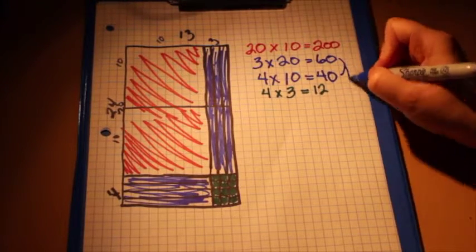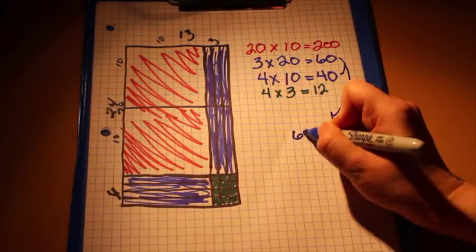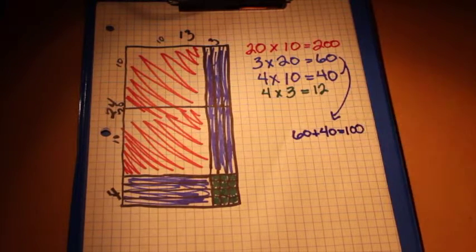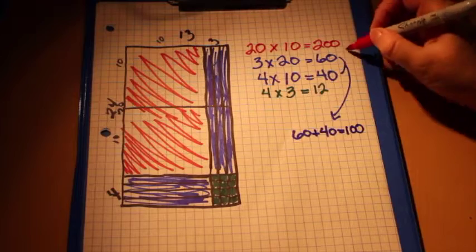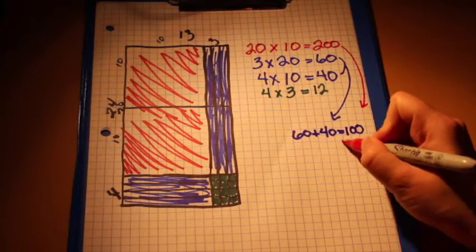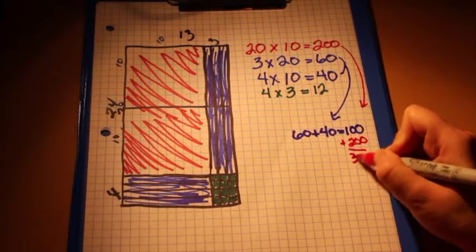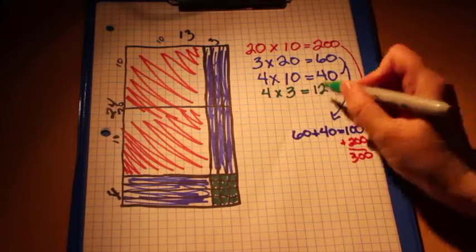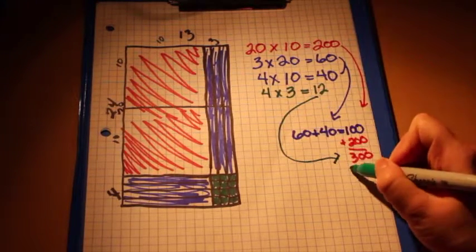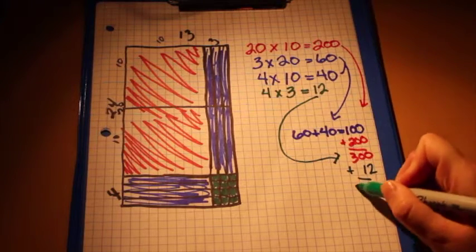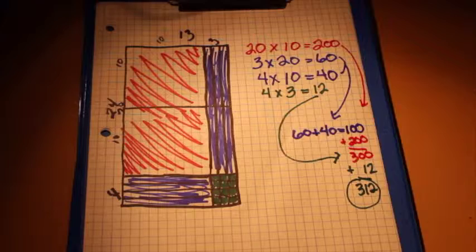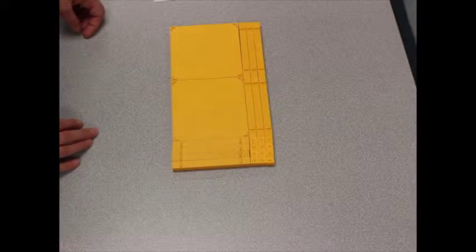60 and 40, if you add them together, equal 100 plus 200 equals 300, plus the 12 is equal to 312, which is our answer. So the answer should be 312.